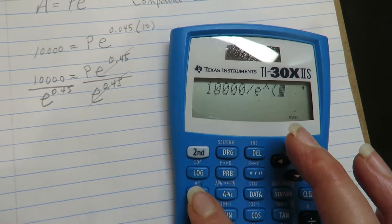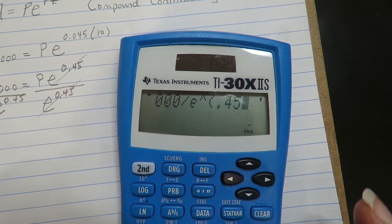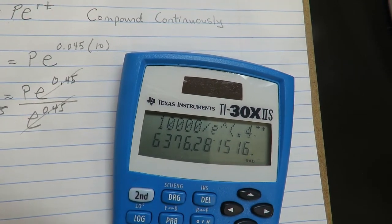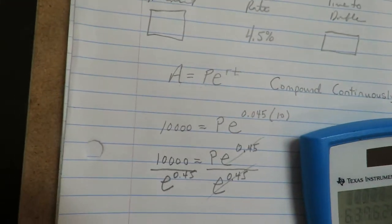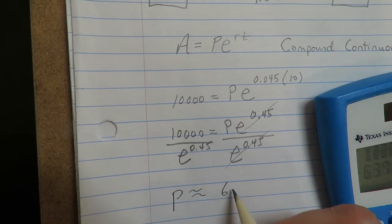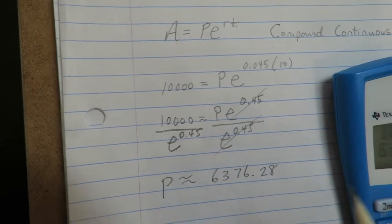I got to find my e key, which is up here, so I have to hit shift, e, and then it's e to the 0.45, close, hit equal. Okay, so let's see here, we got about P is about 6376.28.